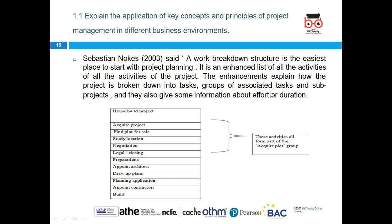Work Breakdown Structure (WBS) is an approach in project management — the easiest place to start project planning. It is a list of all the activities required in the project, showing how the project is broken down into tasks. For example, to build a house: acquire the plot, find a plot for sale, study the location, negotiations, legal and closing, appointment of the architect, draw the plan, planning application, appoint the contractor, and start building.